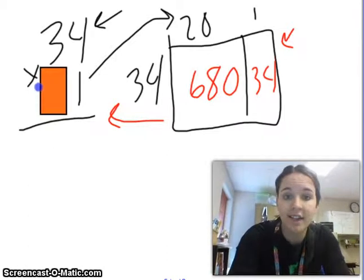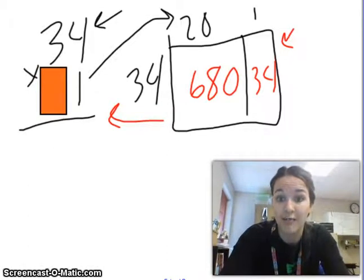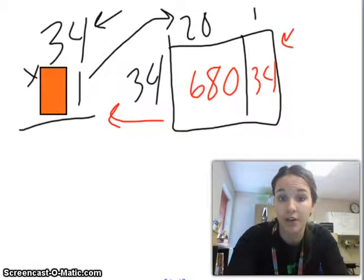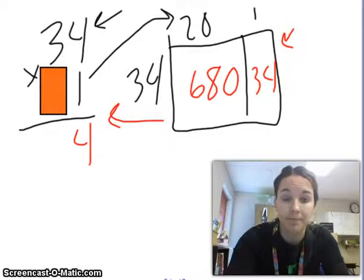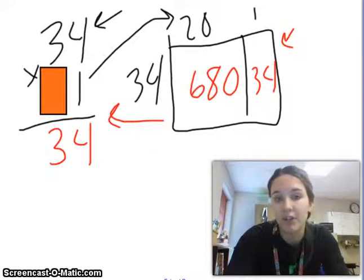Okay. So, I like to think about it as first covering up the tens so that I'm doing 34 times 1, the same exact way that we did over in this right-hand section of the box. So, if I was doing it standard algorithm, I would first look at the ones. 1 times 4 is 4. So, I'm going to put my 4 in the ones column. And I'm going to do 1 times 30. 1 times 30 is 30.